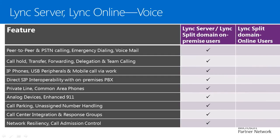Let's have a look at the Lync voice profile. An on-premise user gets all PSTN functionality — making and receiving PSTN calls, call delegation, connectivity to PBX and third-party devices, direct SIP trunk interoperability with existing PBX, call parking, call center integration, response groups, network resiliency for PSTN connectivity, and Call Admission Control for bandwidth management. However, enterprise voice is only possible for users homed on-premise. In a split domain scenario, online users would not get enterprise voice features — they must be homed on-premise to get enterprise voice.